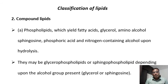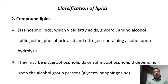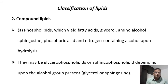The next category is compound lipids. Along with fatty acids and glycerol, these lipids have different kinds of additional molecules associated with them. Examples include phospholipids, where a phosphate group is associated with fatty acids and glycerol. They yield fatty acids, glycerol, amino alcohol, sphingosine, phosphoric acid, and nitrogen-containing alcohol upon hydrolysis. They may be glycerophospholipids or sphingophospholipids depending on whether glycerol or sphingosine is the alcohol group present.